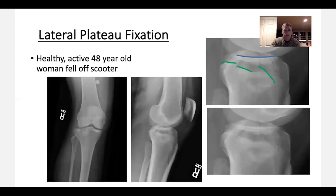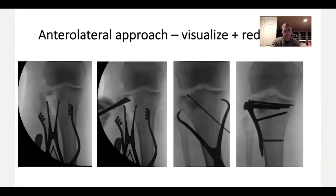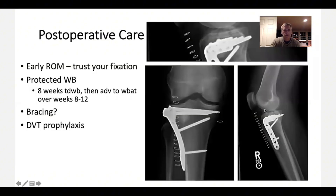Here's an example of a 48-year-old woman who fell off a scooter. On the AP you can see the joint surface is depressed, and it's often best seen on the lateral view where you can really see where the piece is. The CT scan shows the similar pattern. We elevate the joint surface, hold it temporarily reduced with K-wires, and then apply rafting screws on a lateral plate. Postoperatively, get early range of motion and limit weight bearing for 8 to 12 weeks.